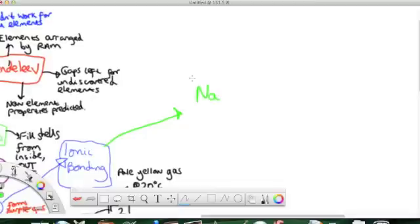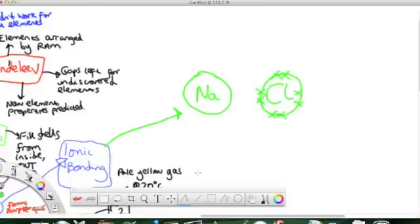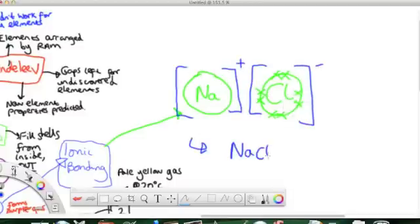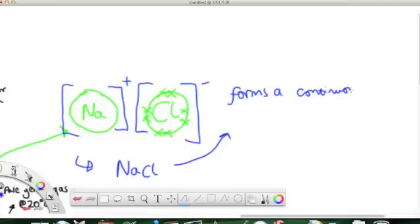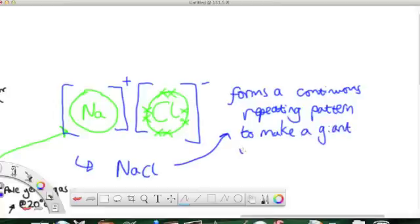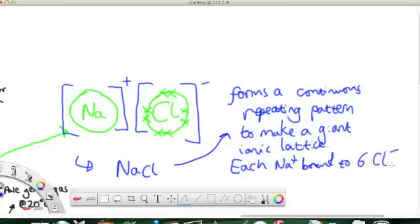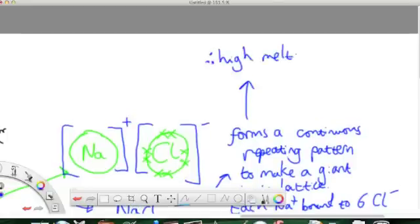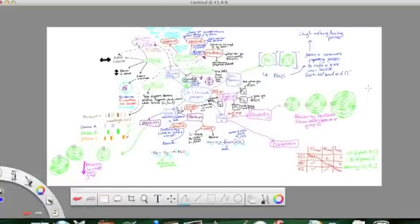So, ionic bonding now. If I draw you the outer shell of a sodium, one electron, and chlorine, seven electrons, the sodium loses an electron, and the chlorine gains one, so they both have a full outer shell. But because the sodium has lost an electron, and chlorine's gained one, sodium becomes positive, chlorine becomes negative, and there's an electrostatic force between the two oppositely charged ions, which means they come together. And this happens for millions of sodium and chloride ions, forming a giant ionic lattice, or a repeating pattern, where every sodium is joined to six chlorines. And that explains the high melting points and boiling points.